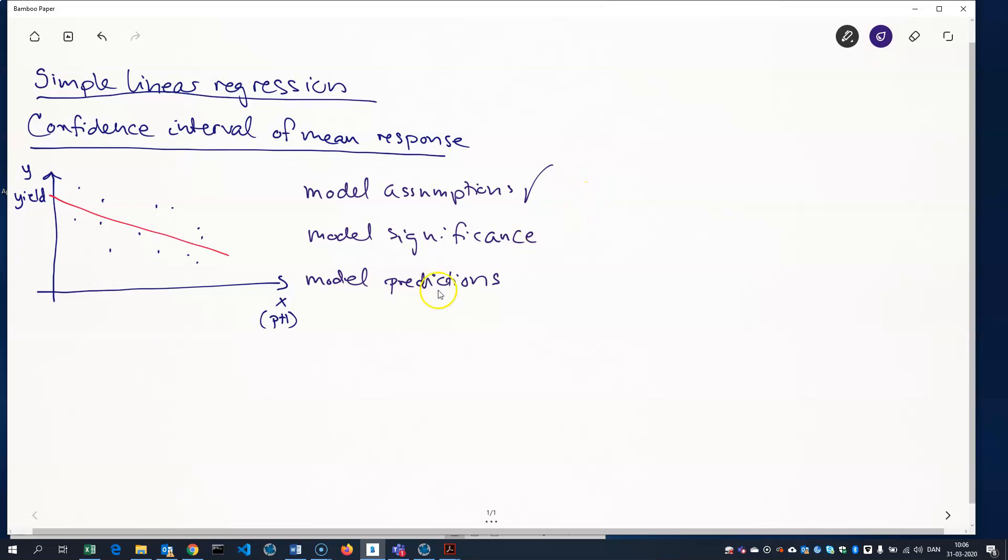And we've checked that there is a significant relation between x and y. We've tested the intercept here. It's significantly different from zero, and we have a slope here, which is significantly different from zero.